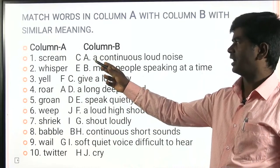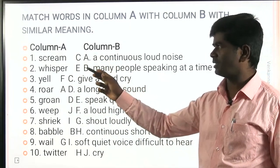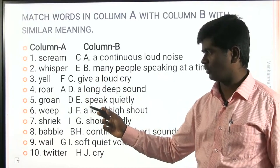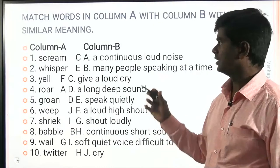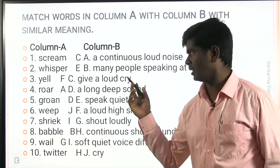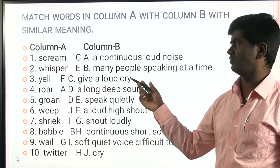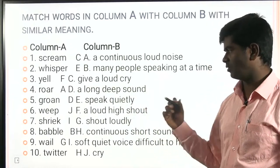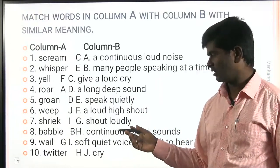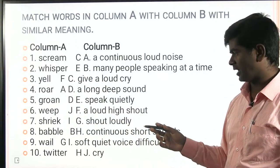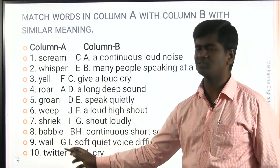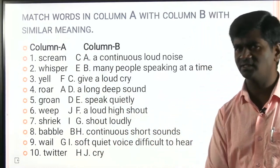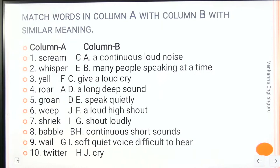Here are different types of sounds and their meanings — scream, whisper, yell, roar, groan, weep, shriek, babble, wail, twitter. These can mean continuous loud sound, many people speaking at a time, giving a loud cry, a long deep sound, speaking quietly, a loud high shout, shouting loudly, continuous short sounds, a soft quiet voice, or a difficult-to-hear cry. If you are serious, take a screenshot and read carefully.